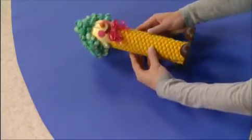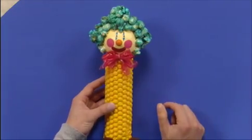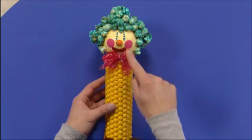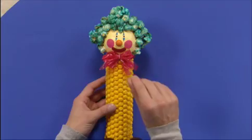I attached a bead for a nose using a toothpick and painted the rest of the face. I made a bow tie out of a pink plastic bag. And that's how you Artzooka a popcorn clown.